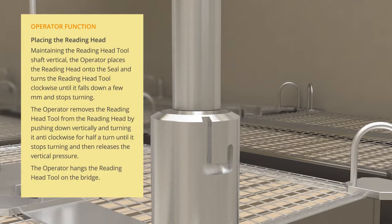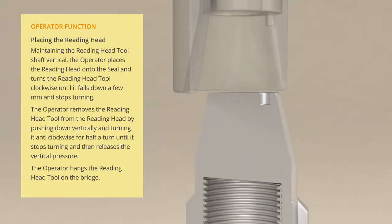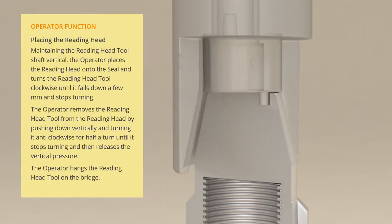Maintaining the reading head tool shaft vertically, the operator places the reading head onto the seal and turns the reading head tool clockwise until the pin of the reading head slots into the hole on top of the seal. A drop off of a few millimeters should be felt.